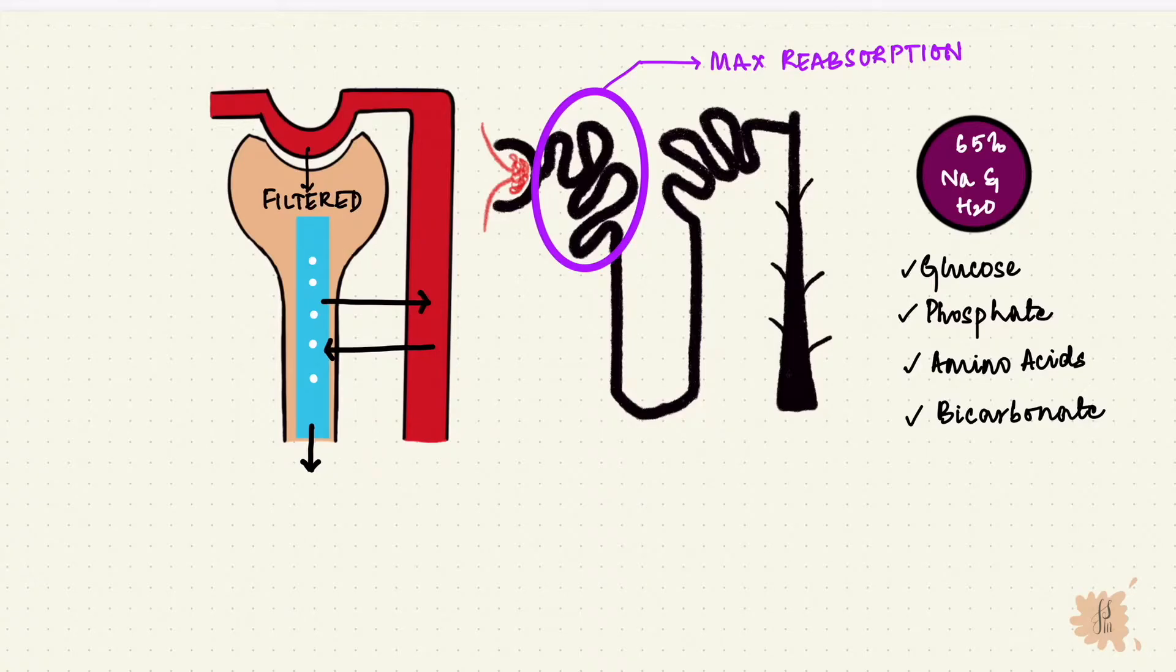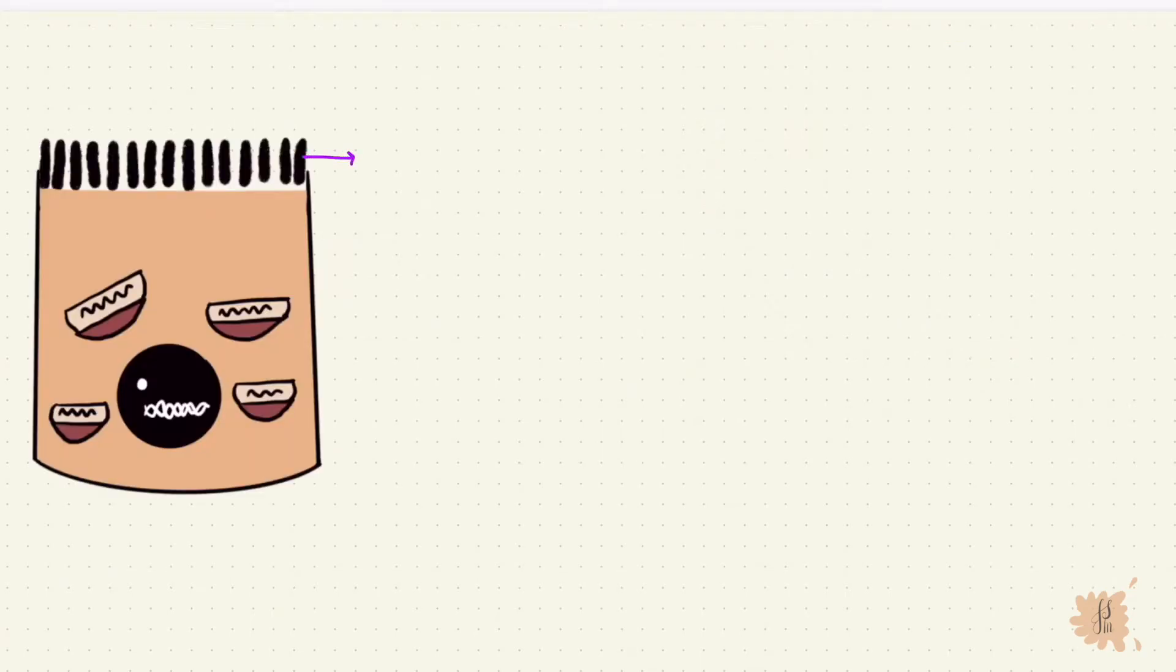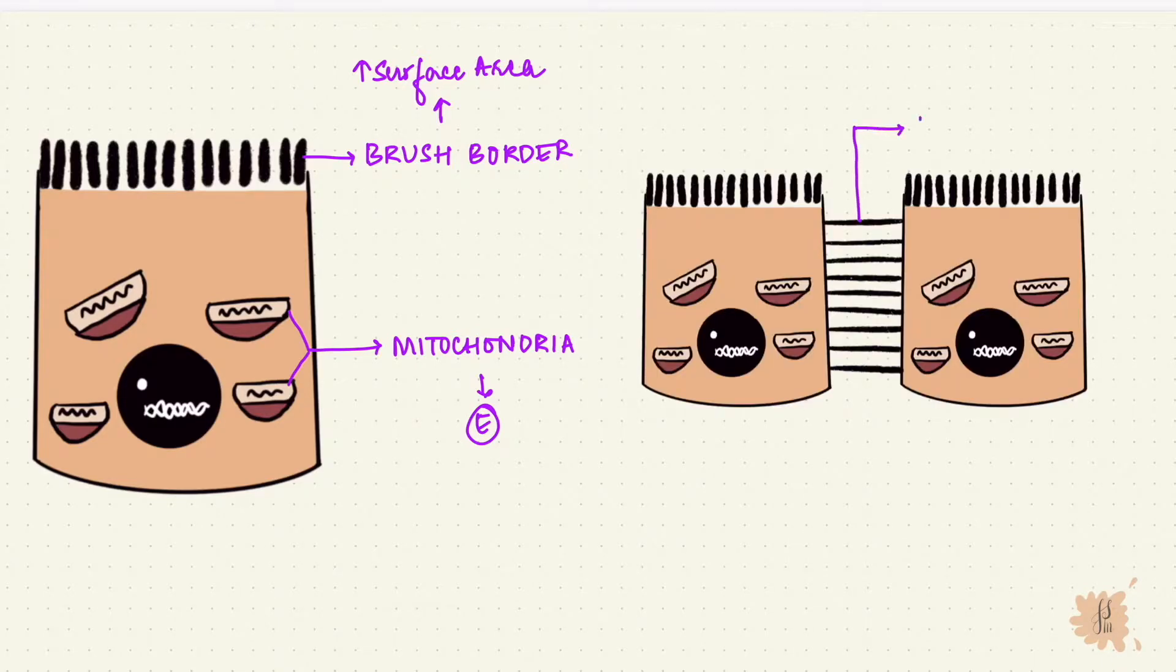Because there is so much reabsorption happening here, there are some structural changes that can aid it. Like the brush border, which increases surface area for reabsorption, and there are lots of mitochondria to provide energy for solute transport. The tight junctions between the cells are a little loose in the proximal tubule when compared to the distal portions of the nephron.